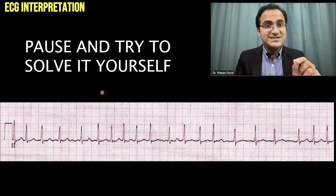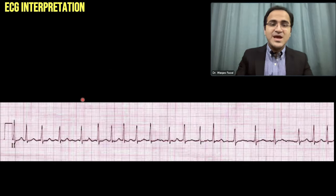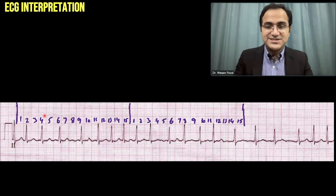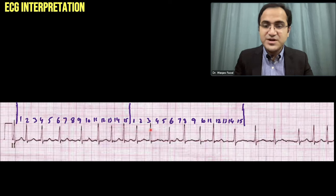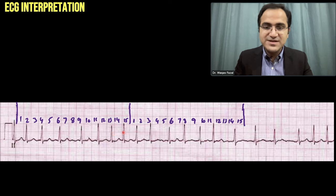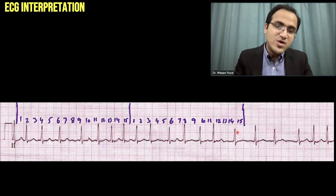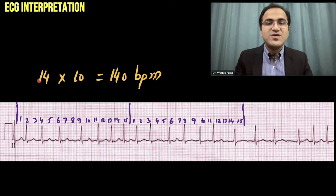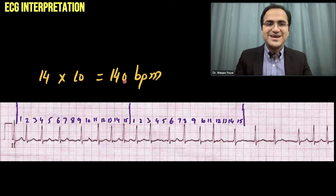Pause the video and solve this second ECG yourself. For the answer: 15 large boxes plus 15 large boxes gives the 6-second strip. Counting QRS complexes: 1 through 14. 14 × 10 = 140 beats per minute — another ECG with the same rate.